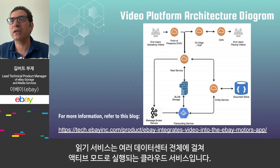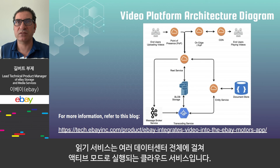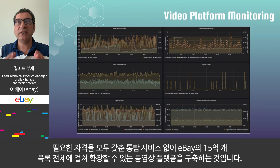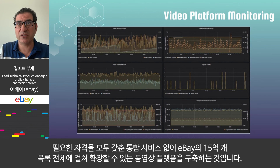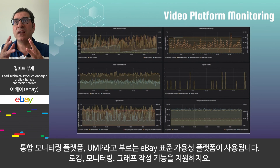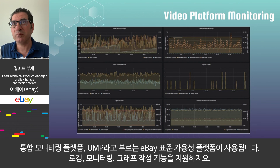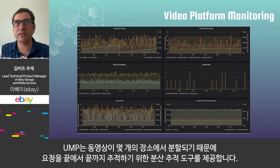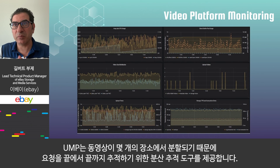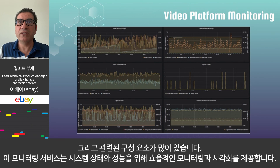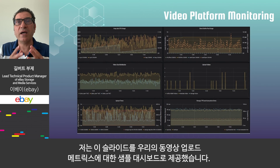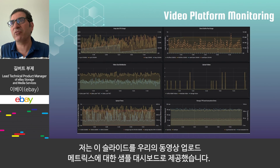Building a video platform that can scale across eBay's 1.5 billion listings cannot be successful without a fully-fledged monitoring service. The eBay standard observability platform — called Unified Monitoring Platform, or UMP — is used. It enables logging, monitoring, and graphics capabilities. UMP provides distributed tracing to trace a request end-to-end, which is critical as the video is segmented at several places with multiple components involved. This monitoring service provides efficient monitoring and visualization for system state and performance. I've provided on this slide a sample dashboard of some of our video upload metrics.